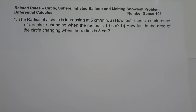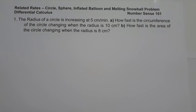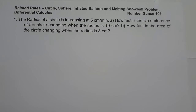On number 1, the radius of a circle is increasing at 5 cm per minute. On letter A, how fast is the circumference of the circle changing when the radius is 10 cm? And on letter B, how fast is the area of the circle changing when the radius is 8 cm?